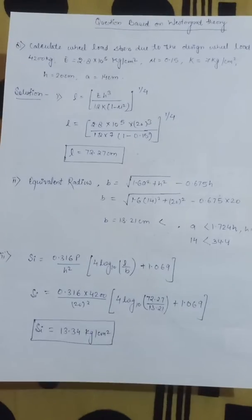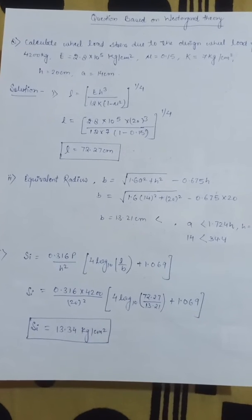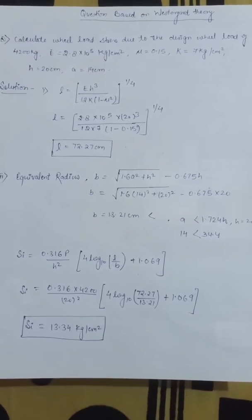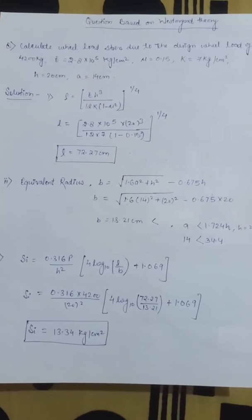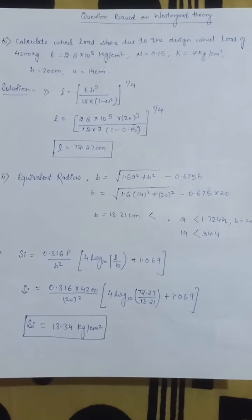We have seen that whatever value we calculate, we keep the edge because the edge section starts to deteriorate over time. We check the corners as well. Let's check a numerical which is based on Westergaard theory.